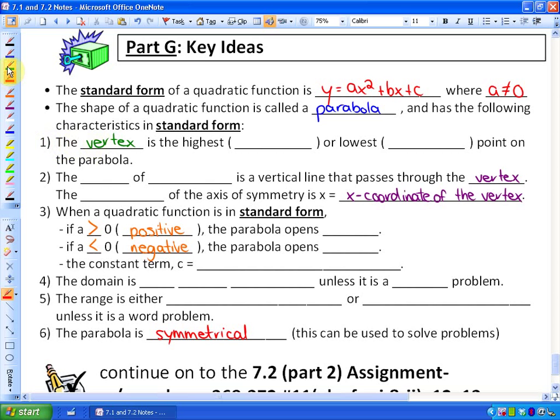Characteristic 1. The vertex is the highest, which can also be called a maximum. And if you are in my class, you may want to pause this to copy this all out. I know I am going quickly. Or the lowest, minimum point, on the parabola. So a maximum would look something like this, and a minimum would look something like this. So those could be the vertex.